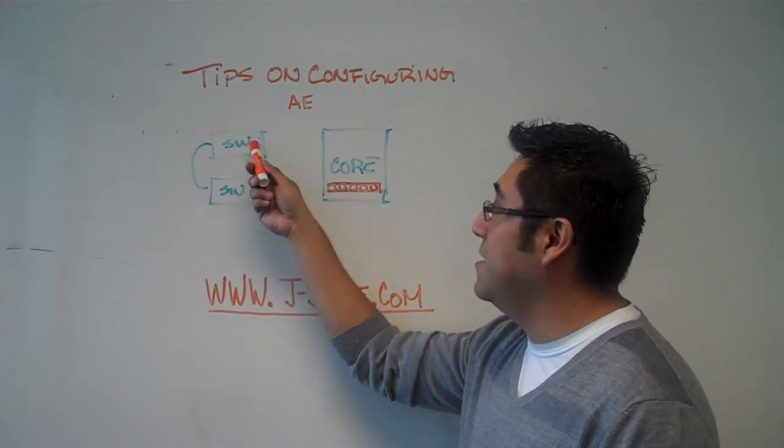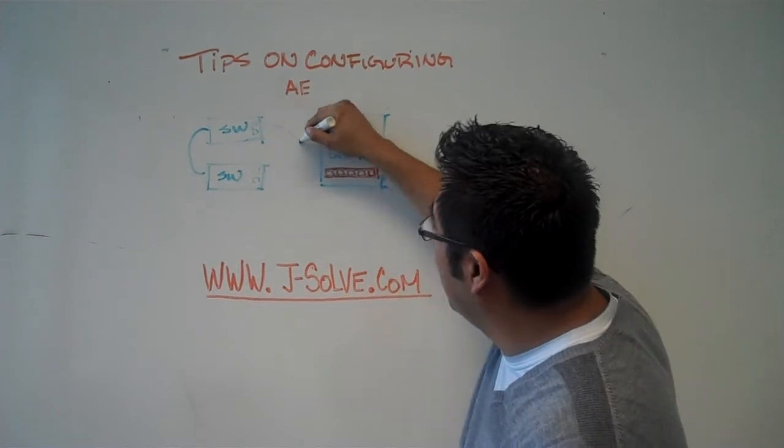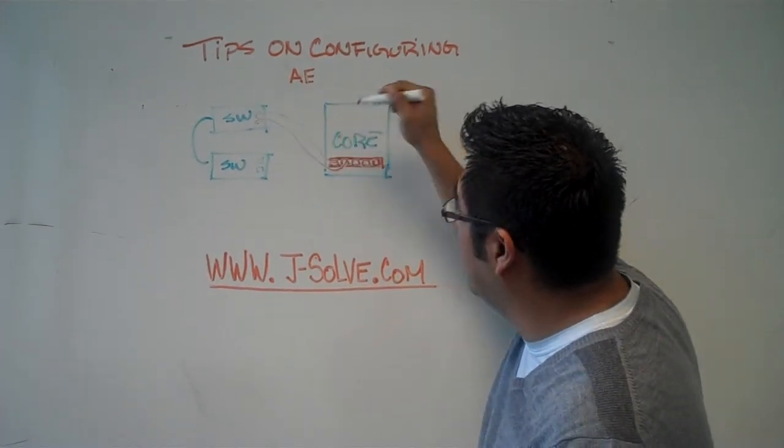But basically what it means is you take a couple ports on a switch, you bond them together, and you bring them together onto another switch. In this case, we're going to our core.